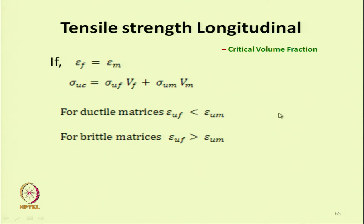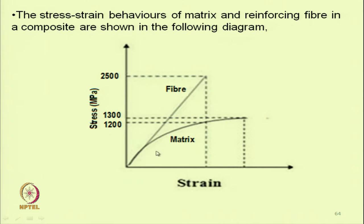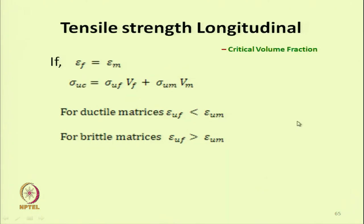We will consider two different situations. A ductile material is where the ultimate strain of fibre is less than the ultimate strain of matrix — so the matrix extension is high. Another composite has a brittle matrix. Typically, brittle matrices are thermoset matrices where the breaking strain of matrix is less than the breaking strain of the fibre reinforcing material.